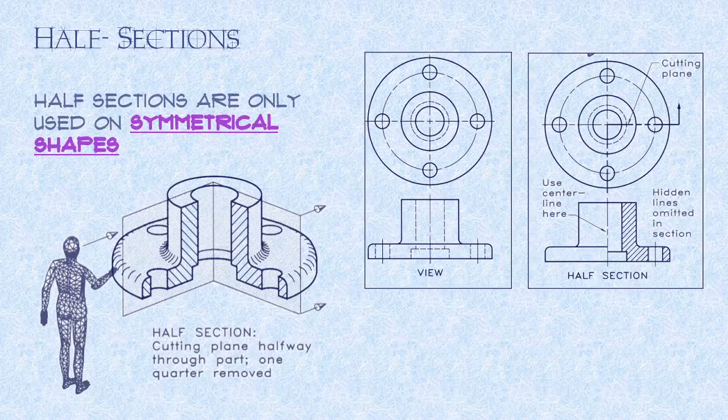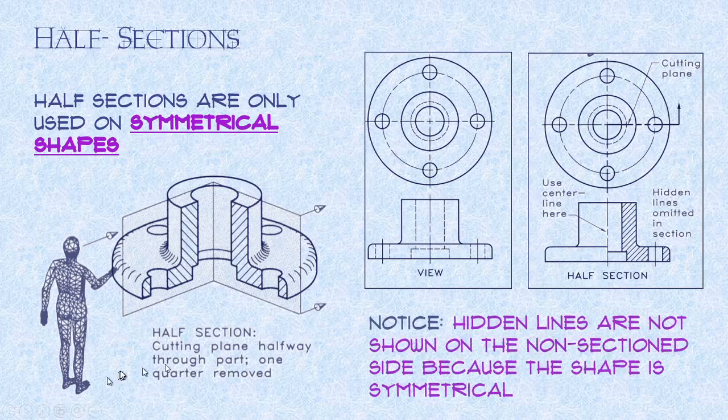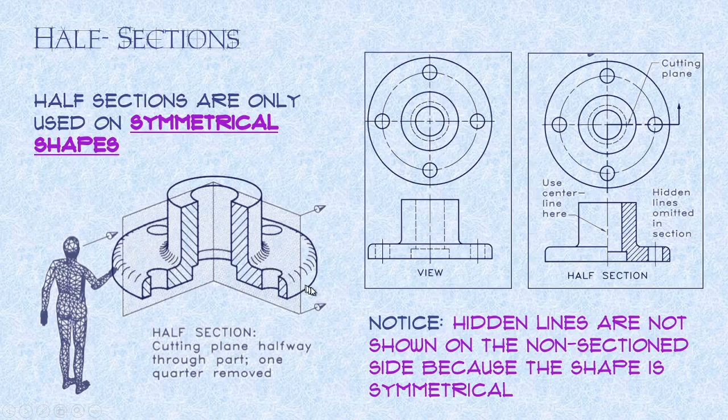After we've done offset sections, we'll move to half sections, and this is where we're going to cut halfway through an object. So looking at our cutting plane, what we're doing is we're cutting halfway through and then cutting the rest of the way through the object. Even though looking at it mentally, you may say, hey, this is a quarter view. But the thing is, we're only going halfway through the object. From here, the center point out, we're cutting halfway through the object. That's why they call them half sections.